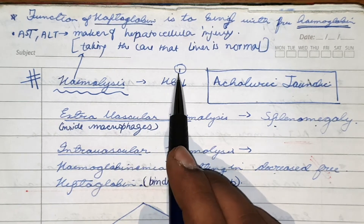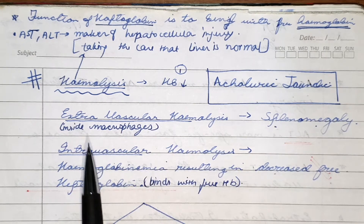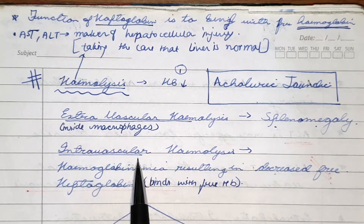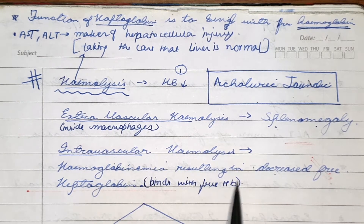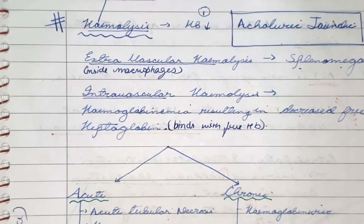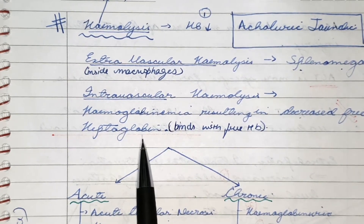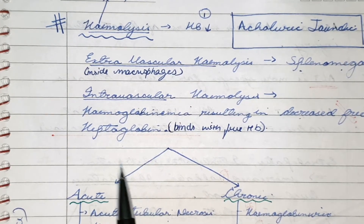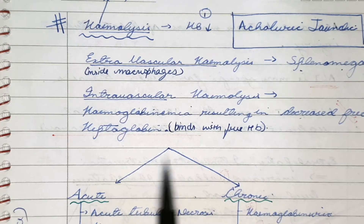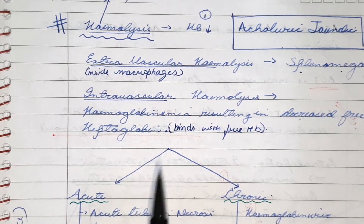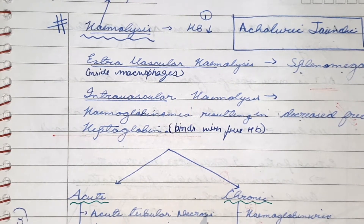In hemolysis there is a decrease in hemoglobin in blood. This could be extravascular hemolysis, for example splenomegaly, or intravascular hemolysis which causes hemoglobinemia, resulting in decreased free haptoglobin. That is because there is so much hemoglobin being formed that most of the haptoglobin is consumed. Haptoglobin is a protein which binds with hemoglobin.